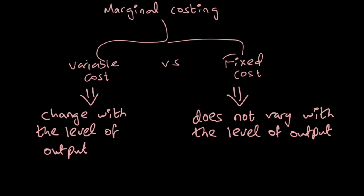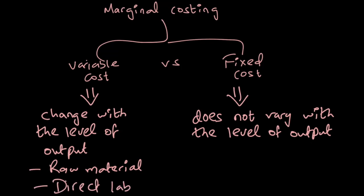A variable cost is a cost that will change with the level of output. As soon as I produce one incremental unit I incur some cost, that cost will be called a variable cost. An example would be raw material — whenever I produce one extra unit I will have to buy material for it. Direct labor refers to workers who will be manufacturing the product; as soon as you ask them to produce one more unit you will have to pay them an additional wage rate, so this becomes a variable cost.